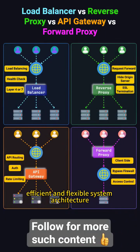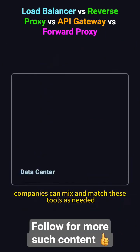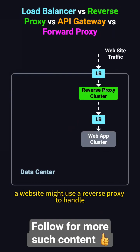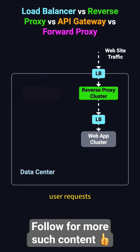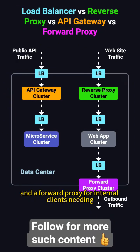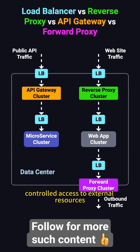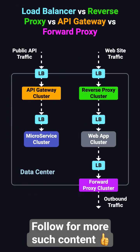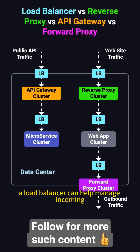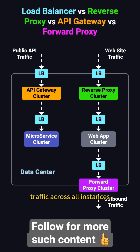To build a secure, efficient, and flexible system architecture, companies can mix and match these tools as needed. For example, a website might use a reverse proxy to handle user requests, an API gateway to manage public API traffic, and a forward proxy for internal clients needing controlled access to external resources. Additionally, when clustering services or applications, a load balancer can help manage incoming traffic across all instances.